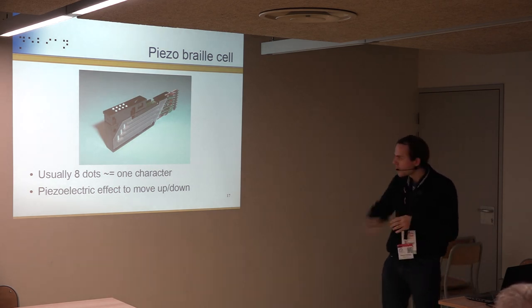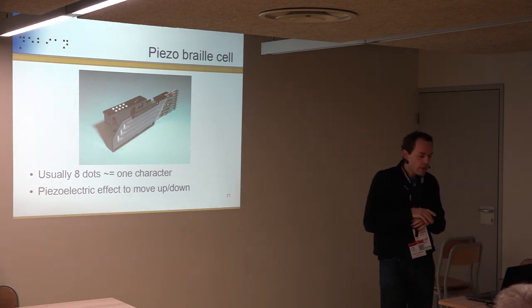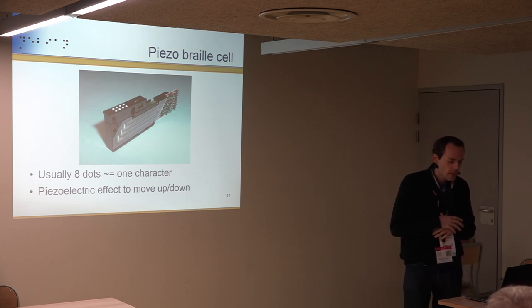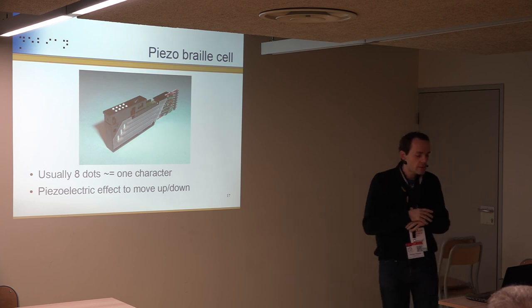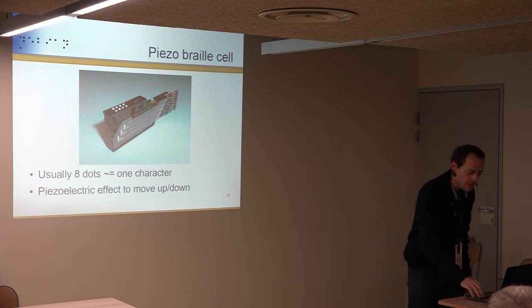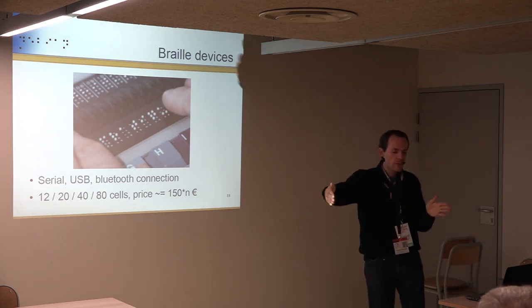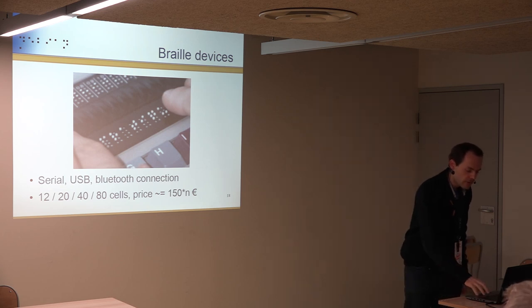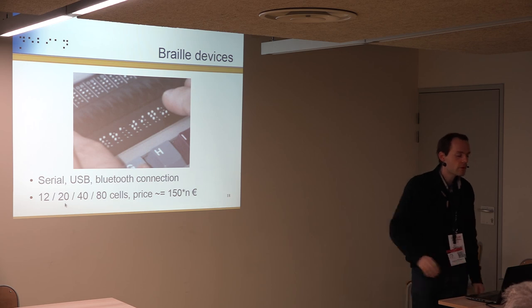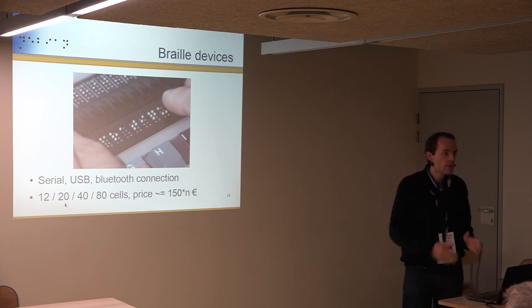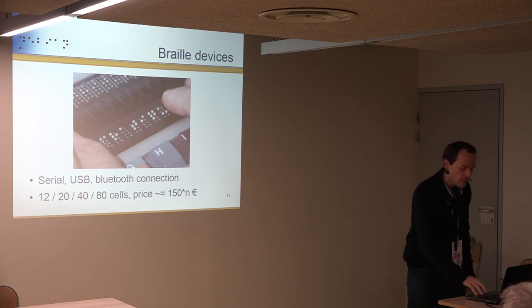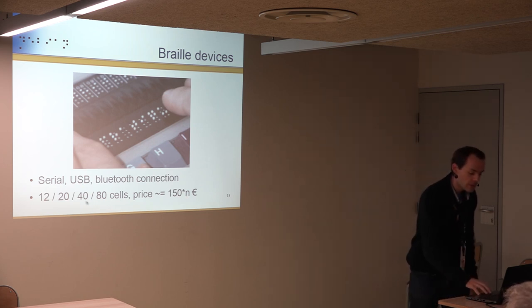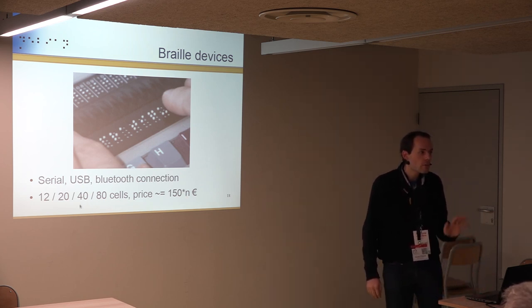A Braille cell has little dots that move up and down, pushed by piezo bars. We put many cells together to form a line and connect to the PC via USB, serial, etc. A typical line has 20 or 40 cells. The cost is approximately 150 times the number of cells in euros — so for 40 cells, that's several thousand euros. It's awfully expensive.